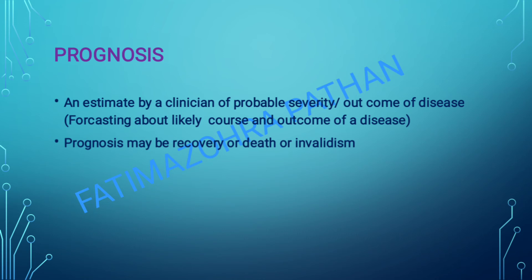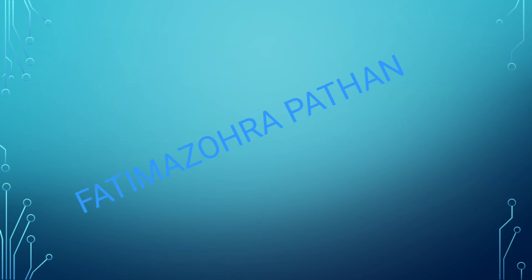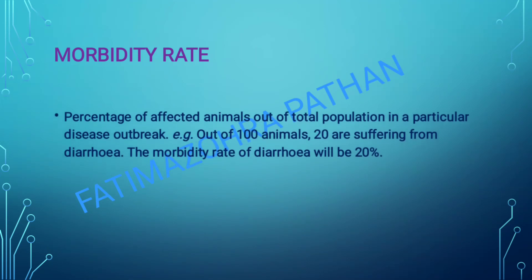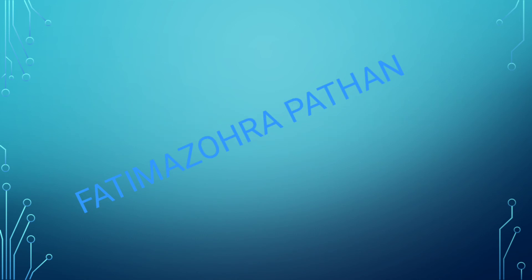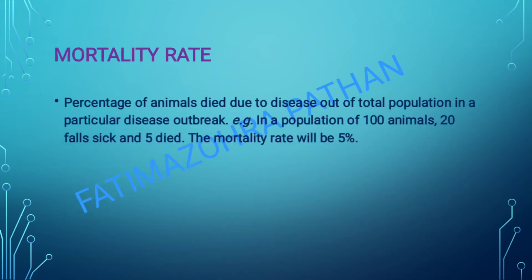Next one hai morbidity rate — percentage of affected animals out of the total population in a particular disease outbreak. Example: 100 animals hain, 20 fall sick (suffer from disease) aur 5 die ho jaate hain. Toh five percent is mortality rate, but twenty percent is morbidity rate.